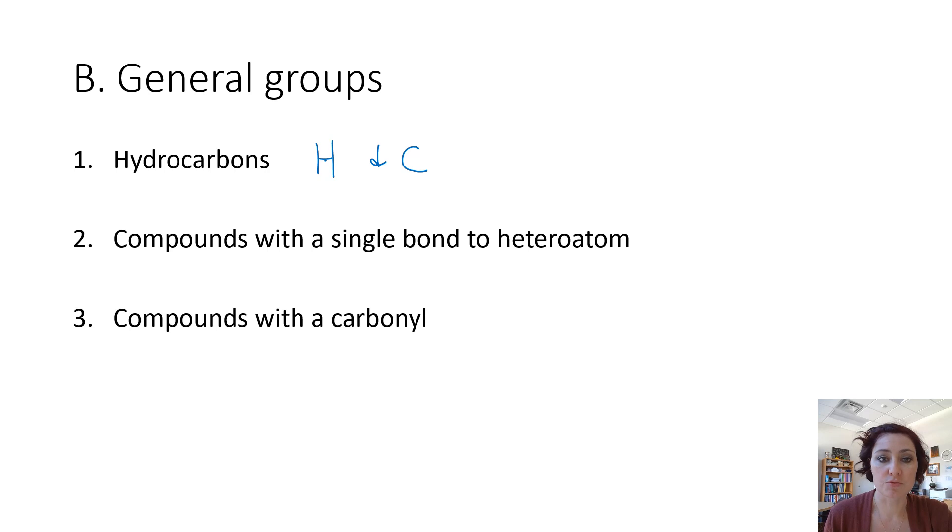The second classification would be compounds that have a single bond to a heteroatom. A heteroatom, again, is anything that's not carbon and hydrogen. We're talking about halides, like fluorine or bromine, or maybe they have a hydroxyl group like OH. We'll get into more of this in just a couple of slides, so don't worry about that. It's a single bond to any of those other heteroatoms.